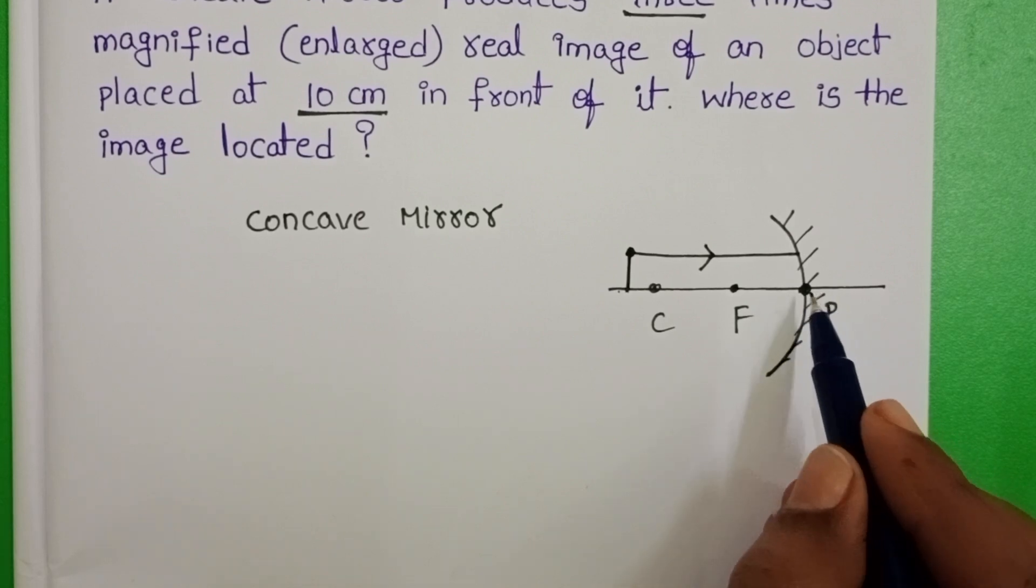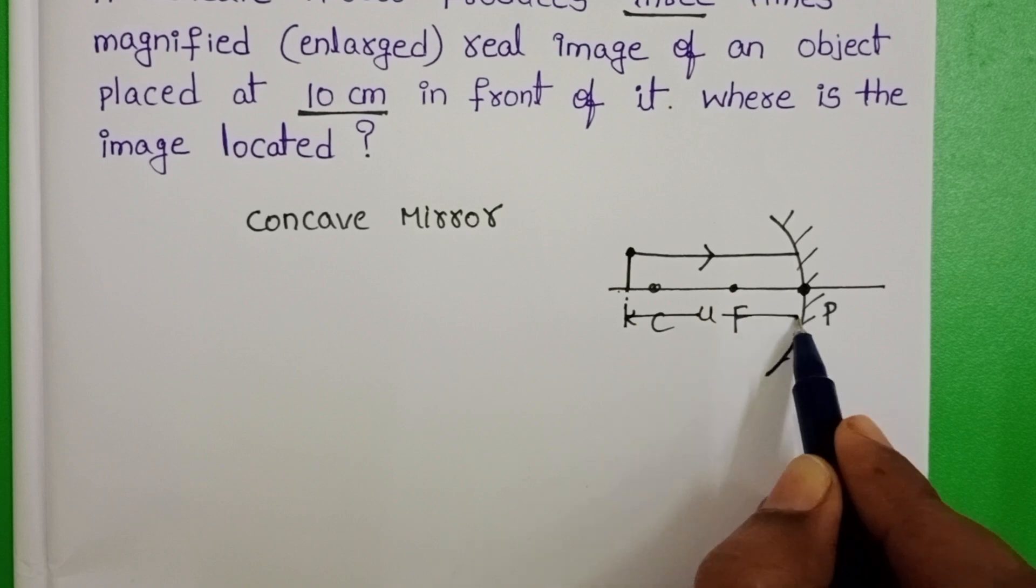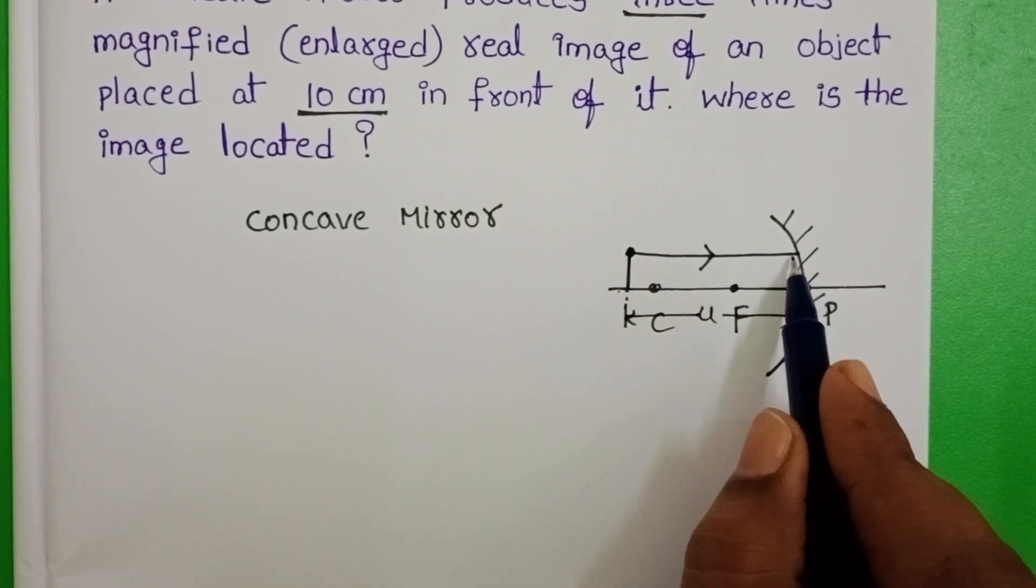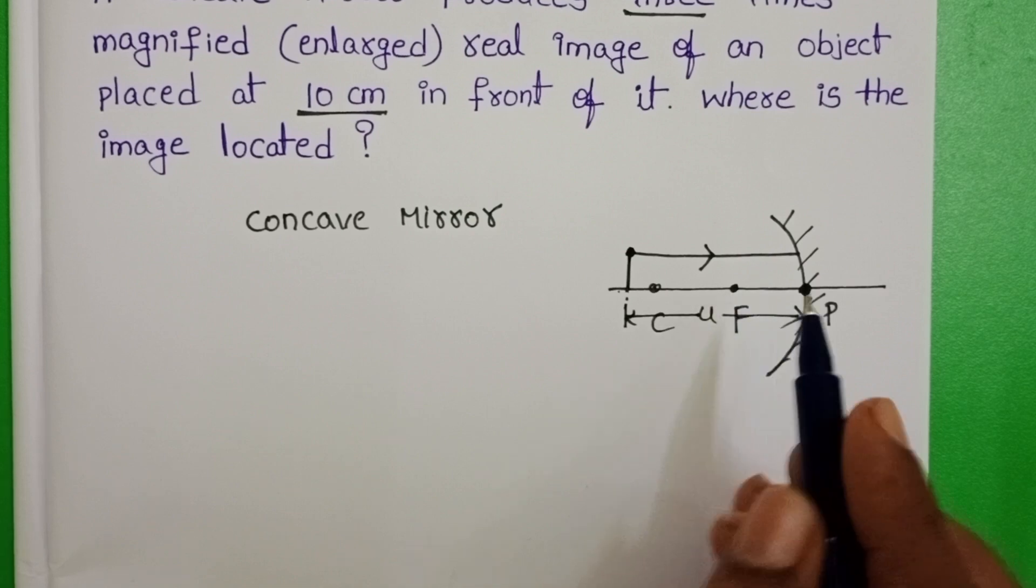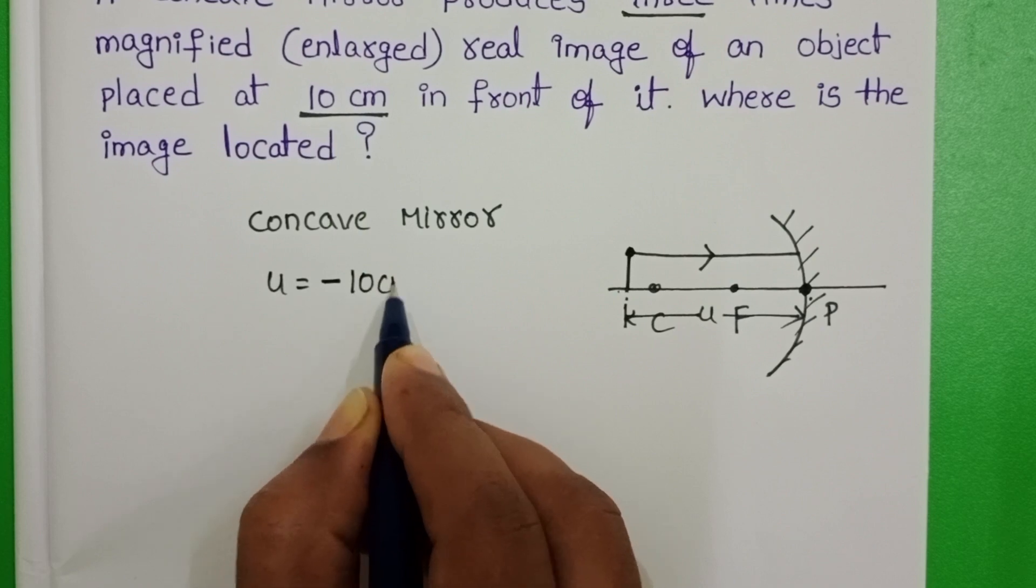All distance is measured from pole. So, the distance from pole to object, this is called object distance. Here object distance is opposite to the direction of the incident ray. So, object distance is negative. U is equals to minus 10 cm.